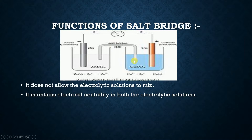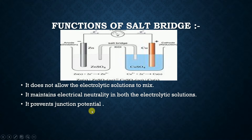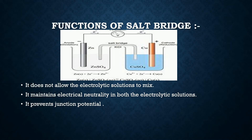The third function is that it prevents junctional potential. Junctional potential refers to the potential difference that would arise between the two solutions. Since the electrolytic solutions are neutralized by K+ and Cl− ions, both solutions become neutral. So there is no potential difference between the two solutions. If KCl had not moved into these electrolytic solutions, there would have been a potential difference between ZnSO4 and CuSO4.